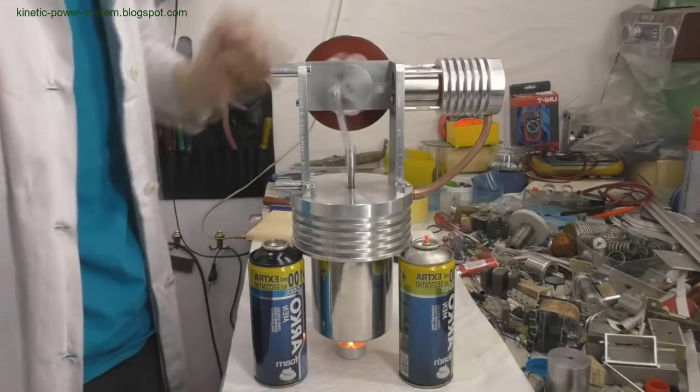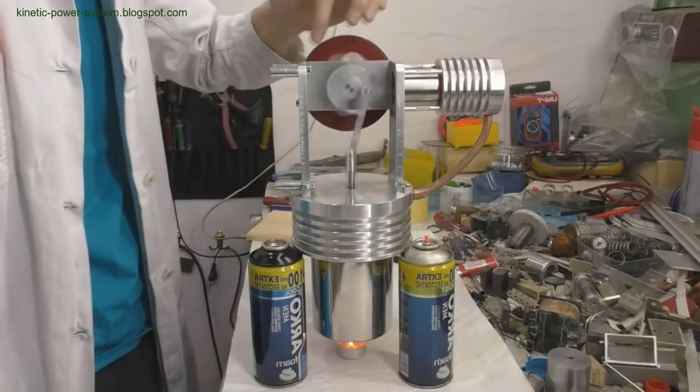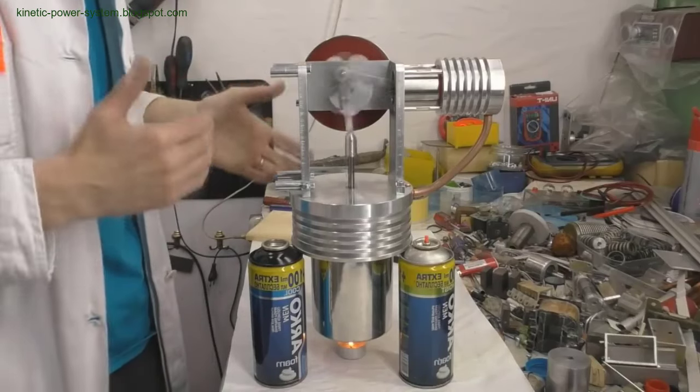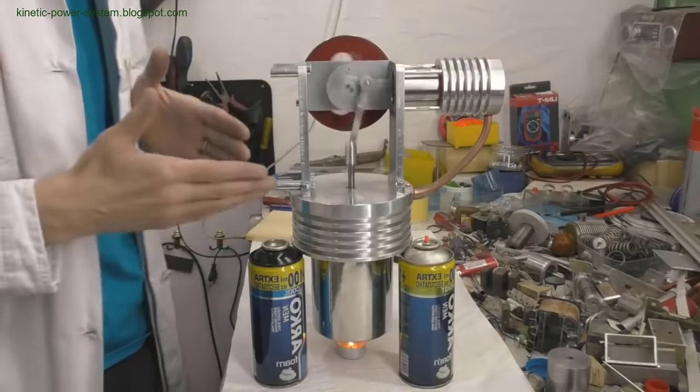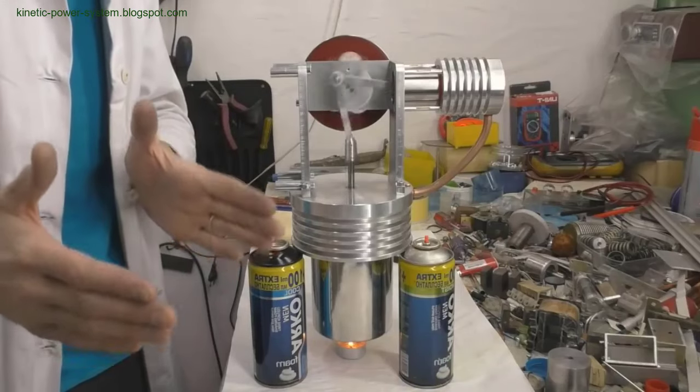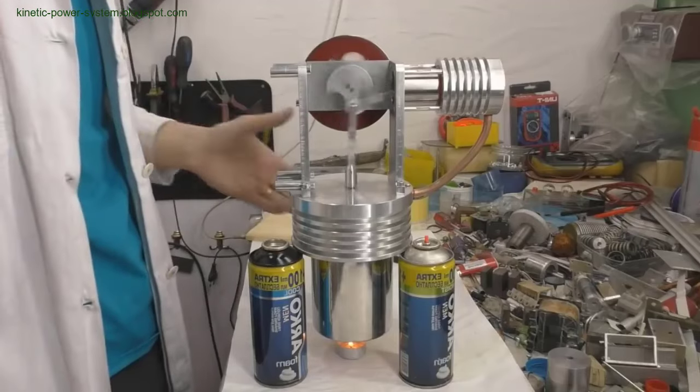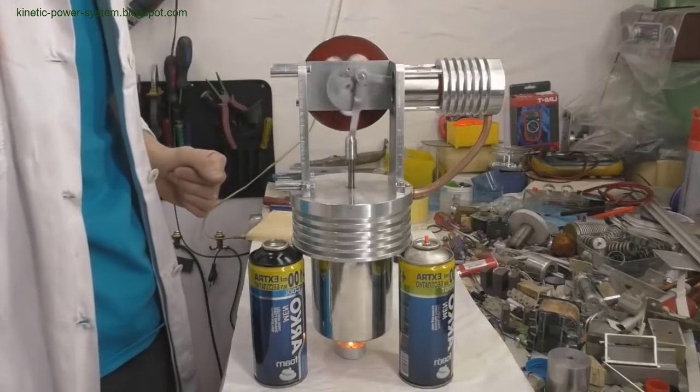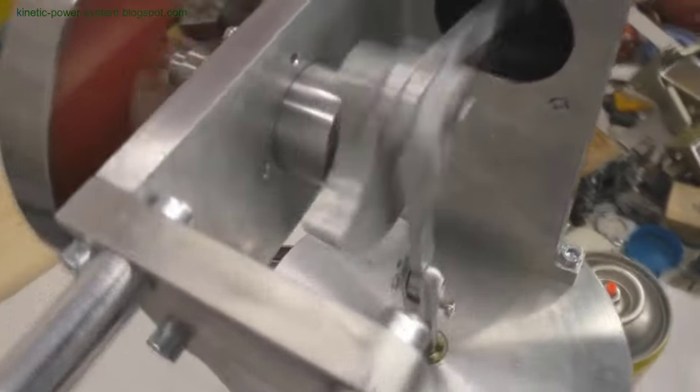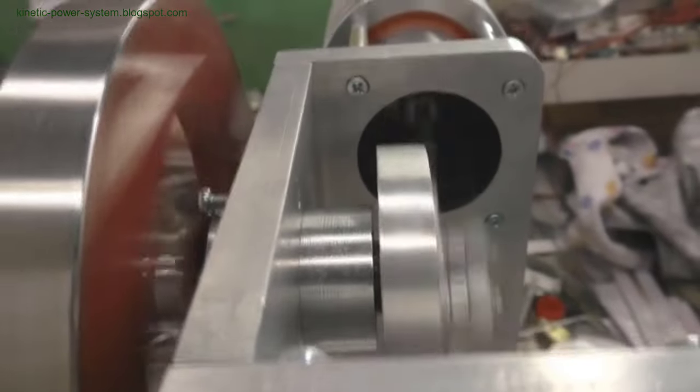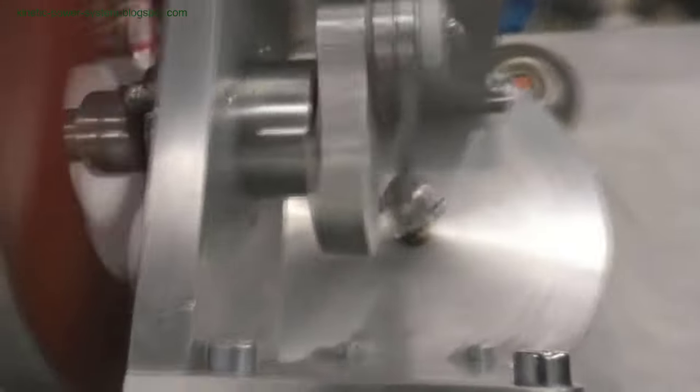Stirling engines offer a unique and potentially transformative approach to power generation. While they face significant challenges in terms of cost, efficiency, and practicality, ongoing experimentation and technological advancements could unlock their full potential. By leveraging excess heat from solar collectors and other sources, Stirling engines could provide a reliable and sustainable power solution for various applications. Continued research and development are essential to overcoming current limitations and realizing the promise of this innovative technology.